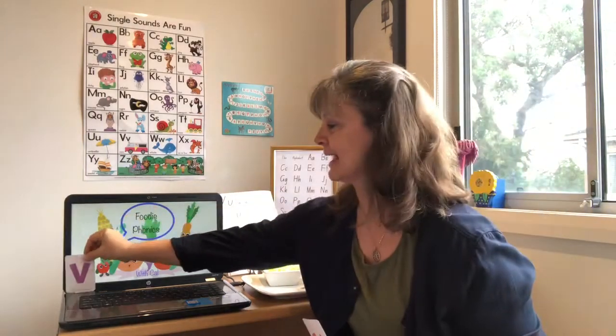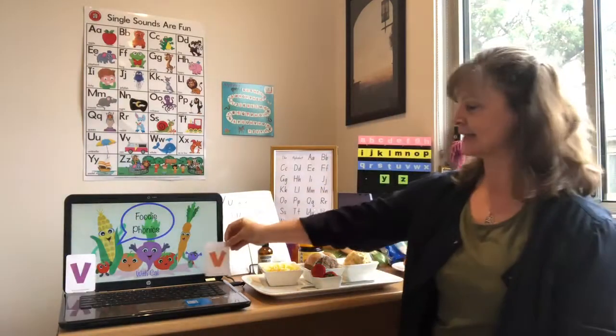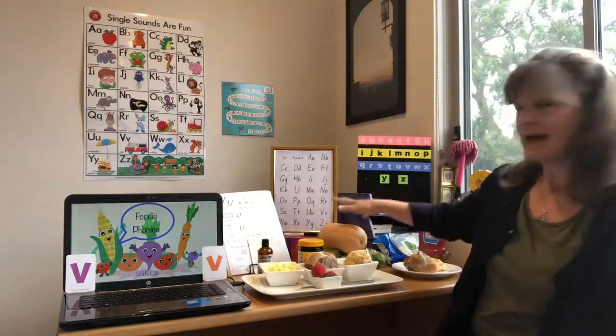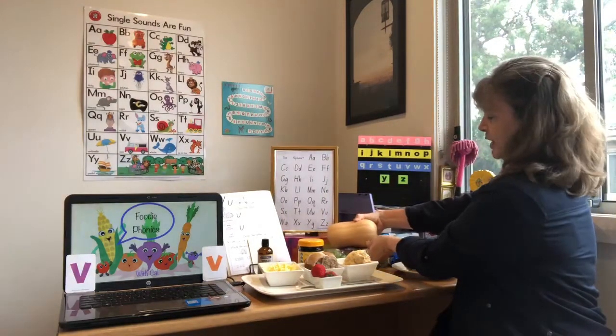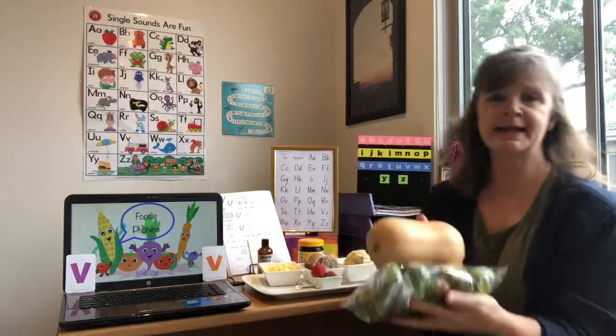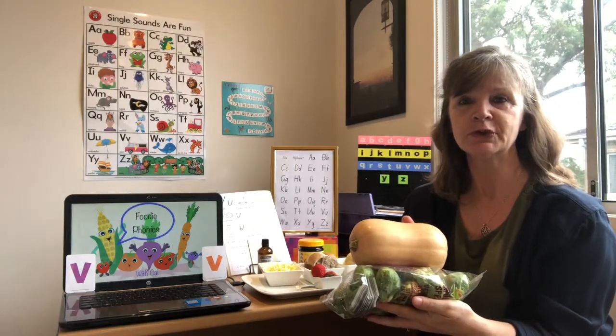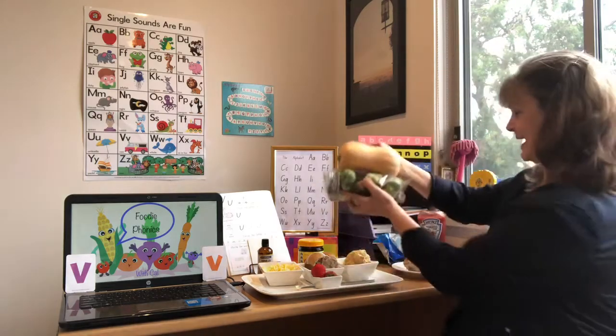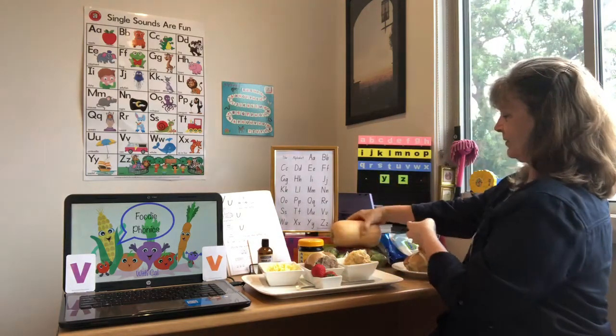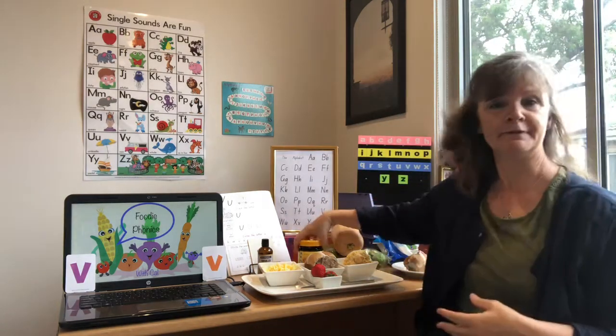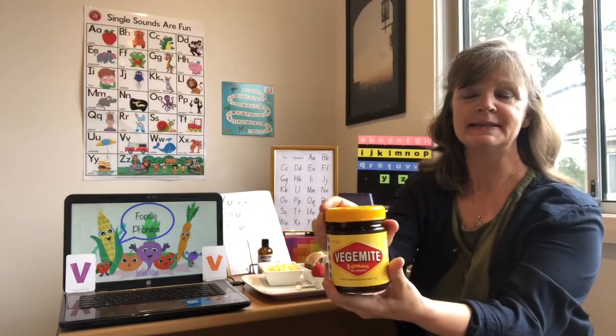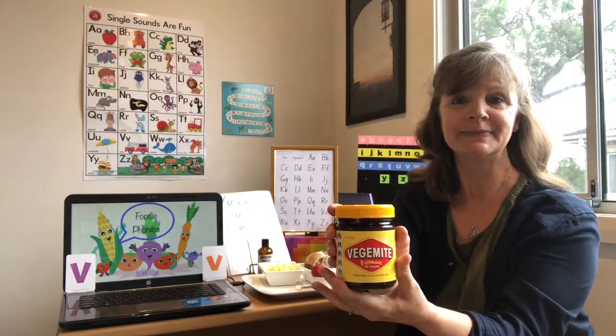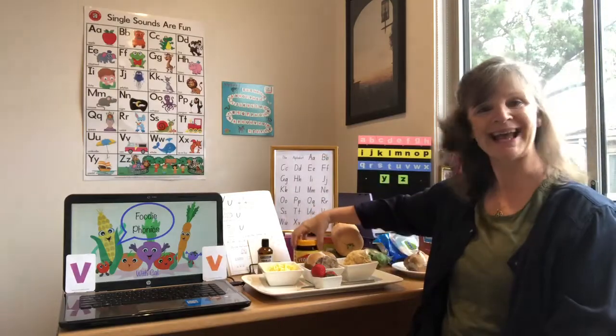Let's have a look on my table to see what I have today that starts with a V sound. I have some vegetables over here. Vegetables are very good for you. They give you strong muscles to run and play and exercise. I also have some Vegemite. Vegemite is full of vitamin B, also makes you strong and healthy.